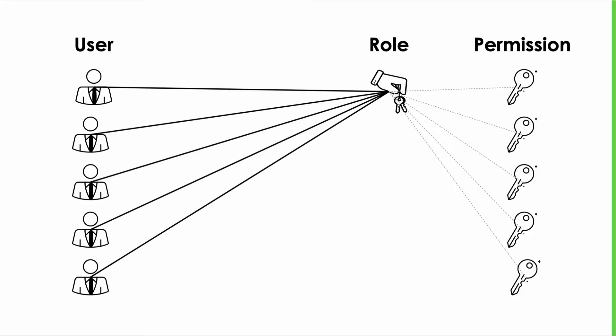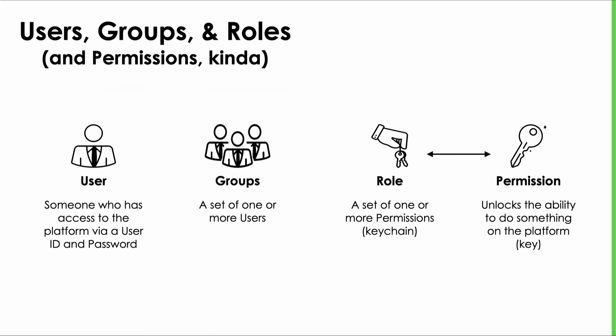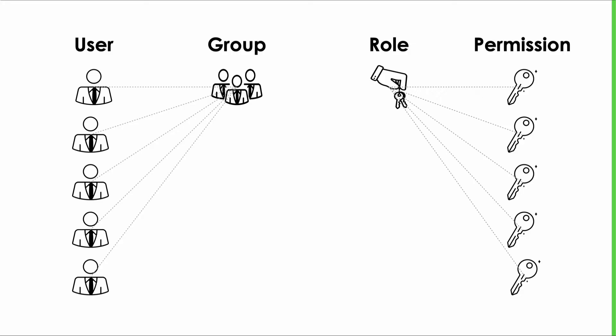So ServiceNow came up with the concept of a group. A group is a set of users that have something in common — most likely the type of work they do, although you can group them however you like. Now I could take my five users and group them into a group, then draw a line between my one group and my one role. That's one line — much better. Individual permissions pass through the roles to the groups and through the groups to the individual users. So now everyone's got what they need through a process that's flexible and easy to manage.